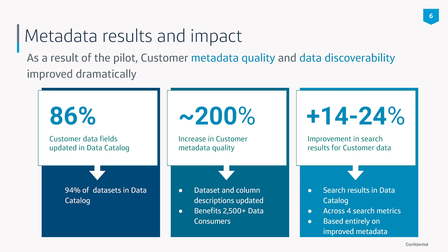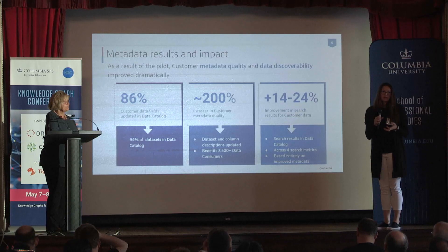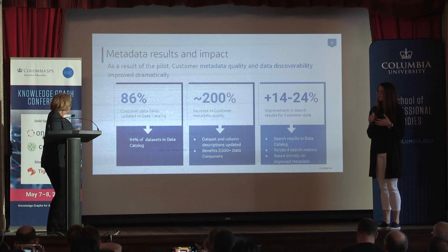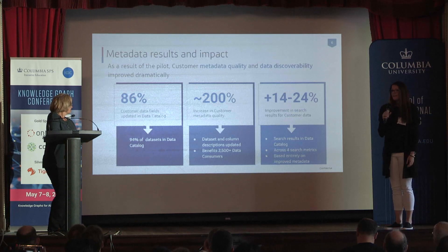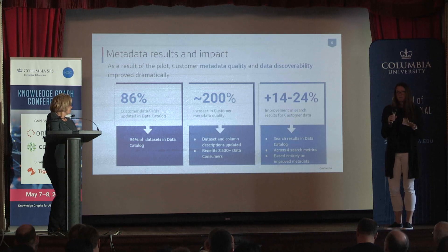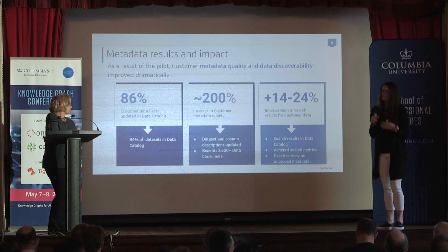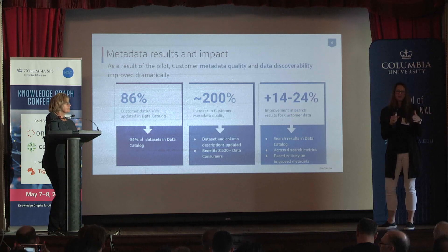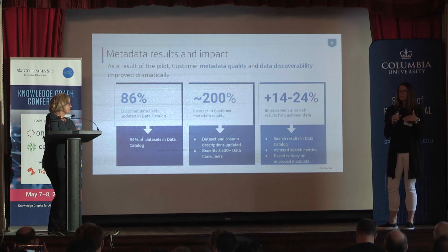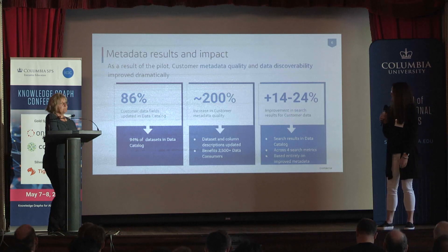The results were pretty impactful. When we shared this with the customer team, they were pretty wowed by how easily we were able to improve the quality of their metadata. Of the customer-related attributes in our data catalog, we updated 86% of them, and this in turn improved the metadata quality for customer data by over 200%. Depending on how you slice search — we used four different search metrics — we estimated we improved the search experience by about 14% to 24%, presenting more relevant results with the highest relevant ones at the top.